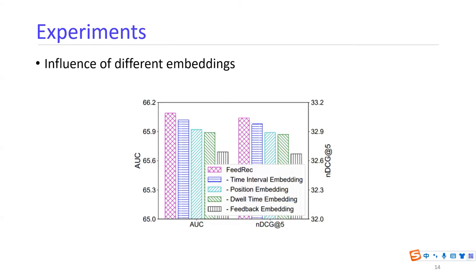We also study the influence of different kinds of embeddings. By removing the different kinds of embeddings, the performance all has a small drop. The most important component is the feedback type embedding, labeled M2E, which indicates the type of feedback. This part has the most important contribution among all embedding types.